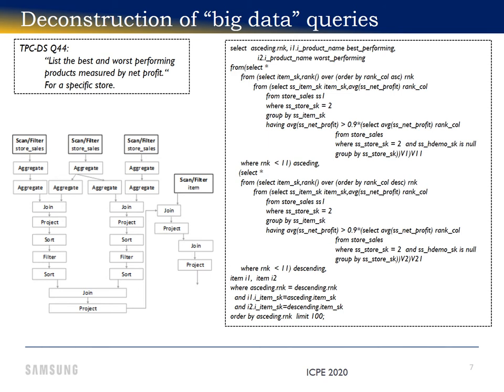Some big table is scanned, which means records are read from storage and transformed to the database's internal format. Some rows from that table are selected and filtered, some columns are selected and projected. The remaining intermediate results are then aggregated, joined, and sorted until the final answer is obtained.